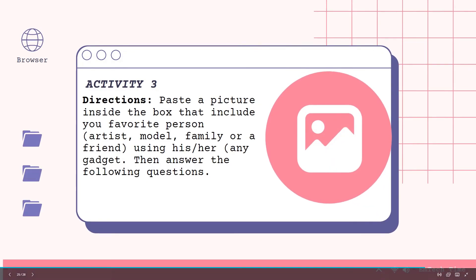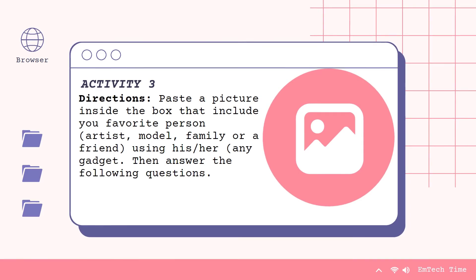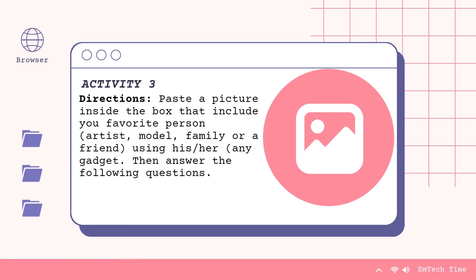The last activity, Activity 3 directions: Paste a picture inside the box of your favorite person — it could be an artist, model, family, or a friend — using his or her gadget. Then answer the following questions: Number 1, how is this person portrayed in different types of media? Number 2, my media life is like... because... And number 3, are digital media a big part of your life? Answer these learning activity worksheets asynchronously.